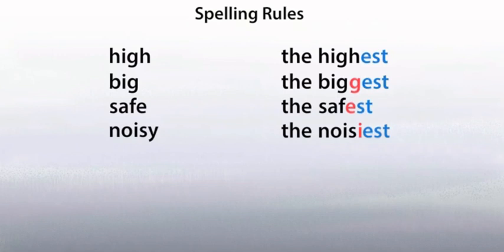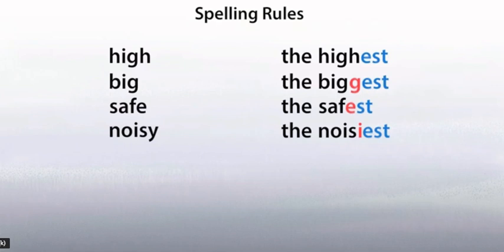You have to pay attention for this rule. If the last letter of the adjective is Y, and before the Y we have a consonant — not a vowel — then we have to delete the Y and put IEST. For example, in 'noisy' we have S before Y, which is a consonant, so we delete Y and put IEST. Pay attention for this rule.